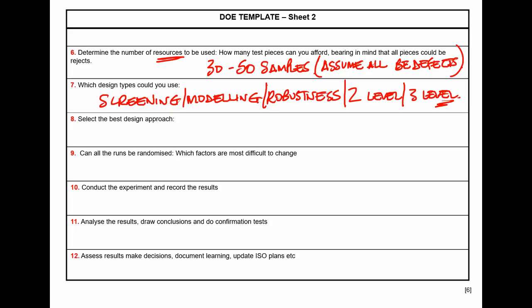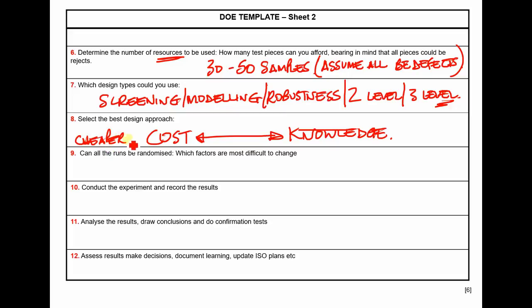Then select the best approach — this will be a compromise between cost and knowledge. You can make the test cheaper by reducing sample size or number of tests, but you have to give up knowledge. If you really want to know how the machine works, do the test as planned and recommended: take 30 to 50 samples, learn loads about your process, and make significant money. To me, the best way to save money is to be at the knowledge end of that scale.